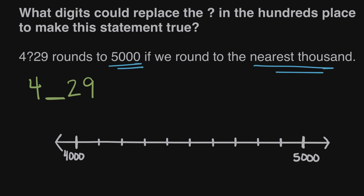So if we want to fill in digits here then we can graph them on our number line and see what are they nearest to. Are they nearest to 5,000 or are they nearest to 4,000?